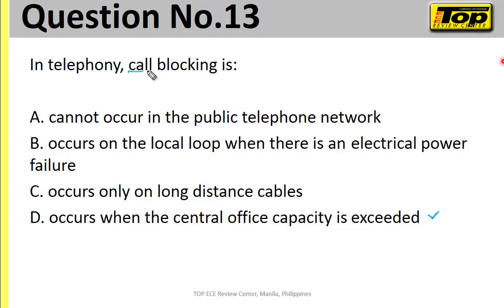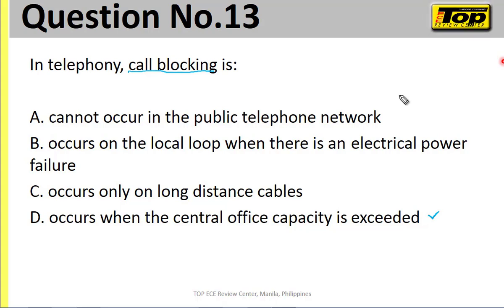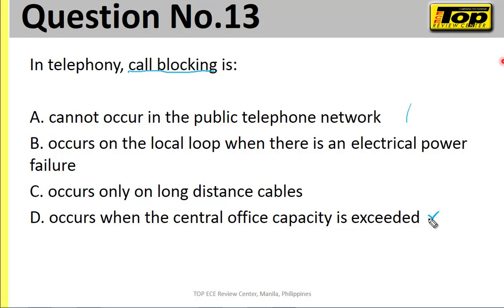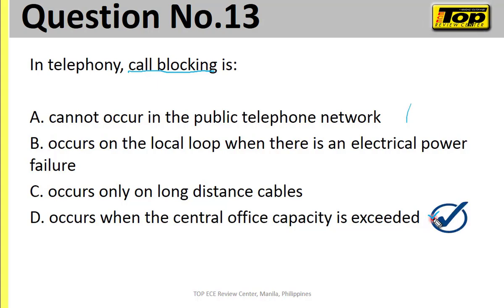Call blocking is when your call cannot reach the destination — for whatever reason. When that happens, you get a busy tone (BC tone). There are two possible causes of call blocking: first, the destination phone is off-hook, meaning it's already in use; second, as stated in our answer letter D, the central office capacity is exceeded — there's no available circuit to route the call.